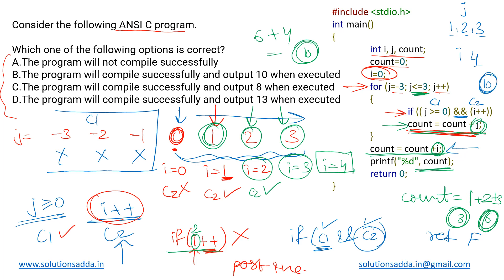This 10 is what gets printed. The program compiles successfully and its output is 10, so the correct option is B.